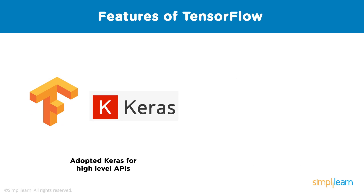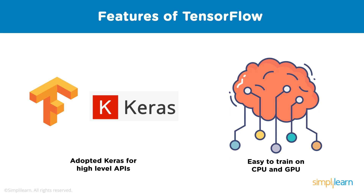Another feature is that TensorFlow has adopted Keras for high-level APIs. Keras is an extension for making it easier to read and write machine learning programs. While TensorFlow is an open source library, Keras is simply a neural network library. TensorFlow provides both high-level and low-level APIs, while Keras provides only high-level APIs for neural networks. It's also easy to train a machine learning model on both CPUs and GPUs using TensorFlow.